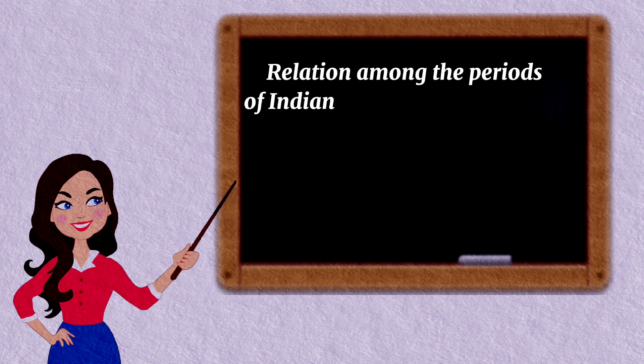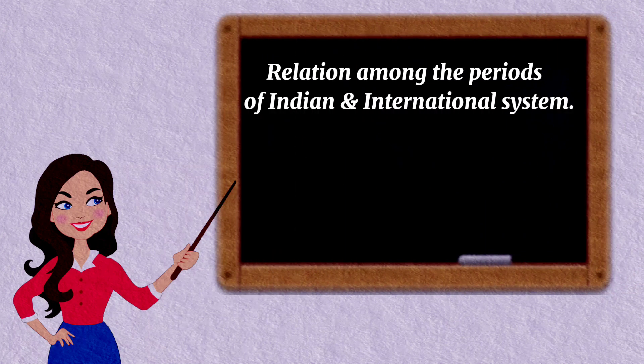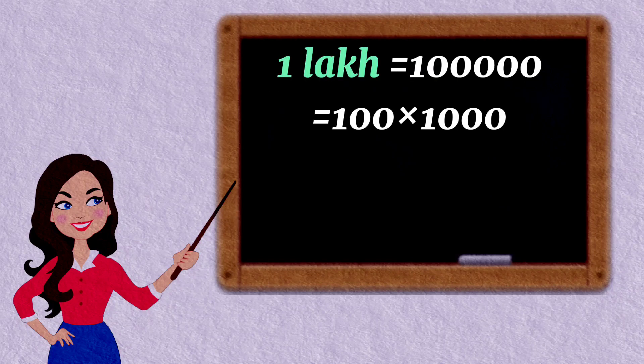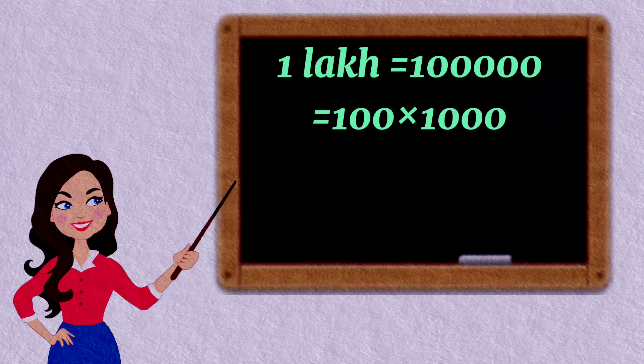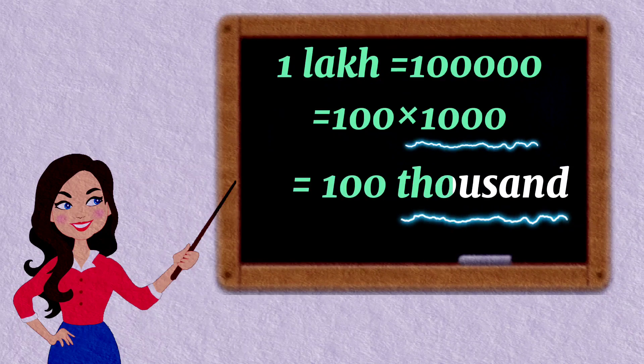Now let us evaluate the relationship among the periods of Indian and international system. One lakh is equal to one followed by five zeros, which we can split and write as 100 into 1000, which is equal to 100,000.